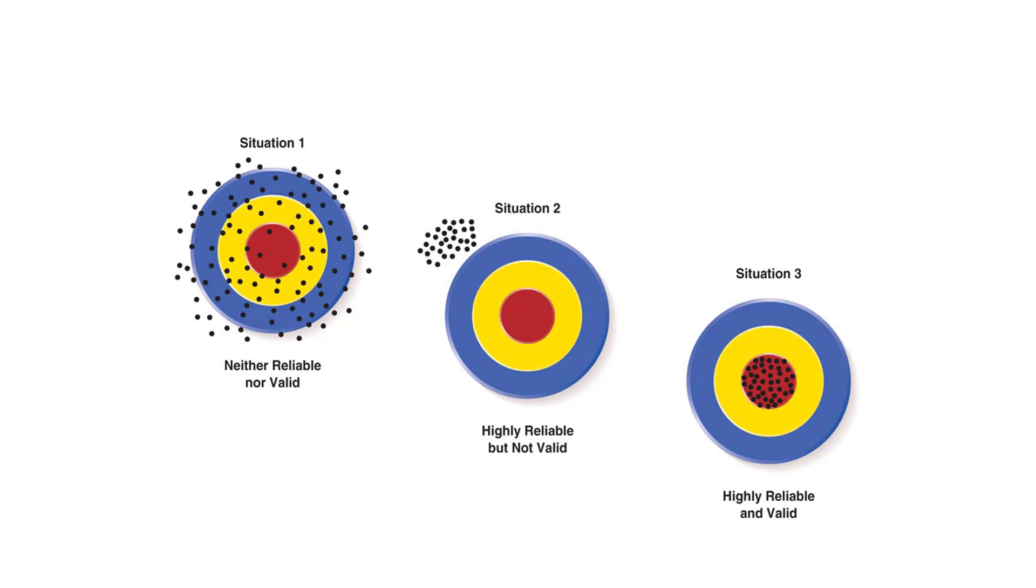Now here's a question for you: if a measurement is valid, is it necessarily reliable? Question number two: if a measurement is reliable, does it necessarily mean it is valid? The answer is that if a measure is reliable, it doesn't necessarily mean valid. But if a measure is valid, it is necessarily reliable. Let's stop here now, and we'll cover the rest of the lecture in part two.